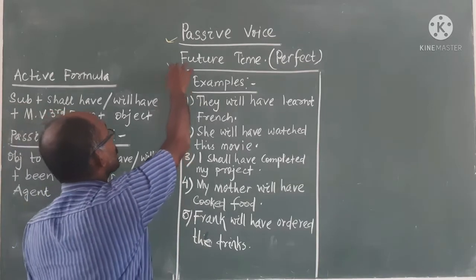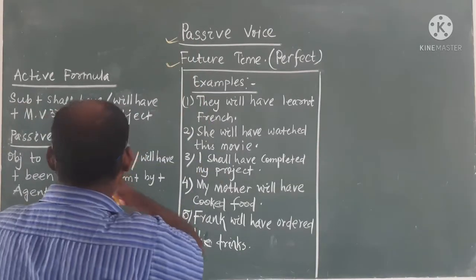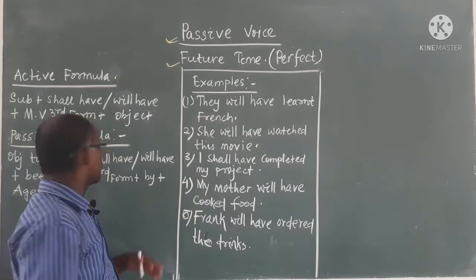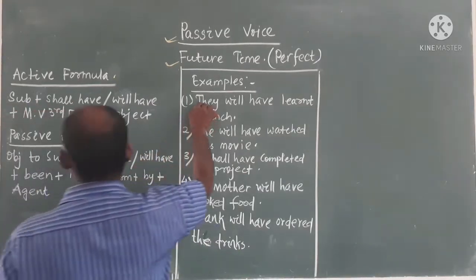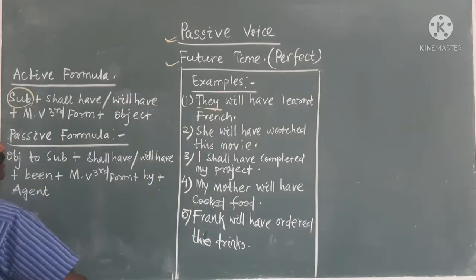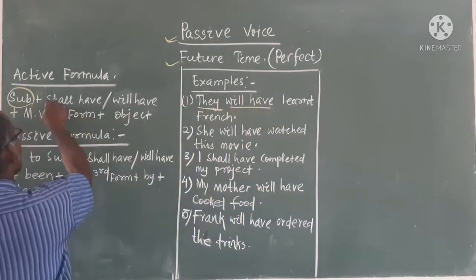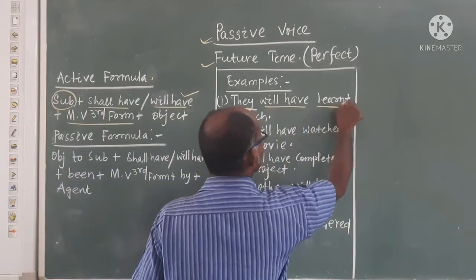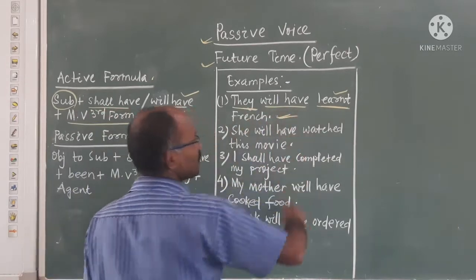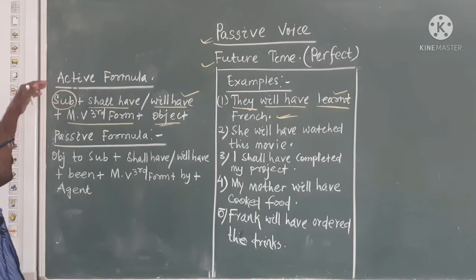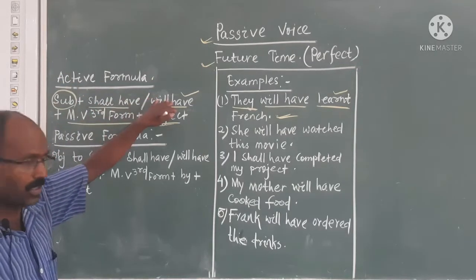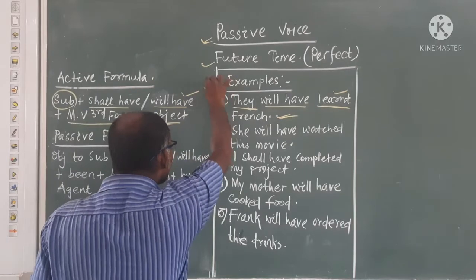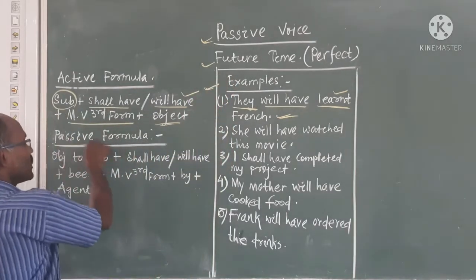As we are going to discuss future passive voice, I want to remind you of the active formula. The active formula: subject, then shall have or will have, then main verb third form, then object. In every sentence you will find: subject + shall have/will have + main verb third form + object.